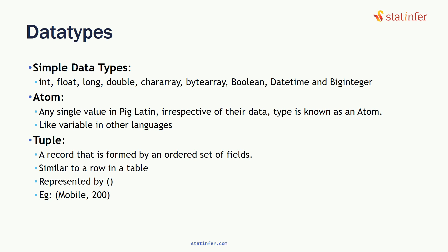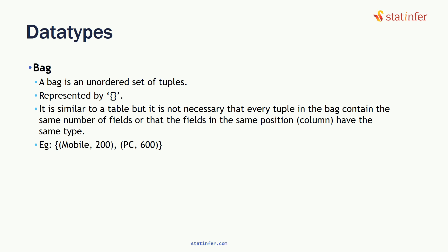Another important data type is tuple. A tuple is like a row in a generic data table — it contains an ordered set of fields. For example, a mobile item with price 200 is represented as (mobile, 200). The parentheses represent the tuple. If you have 20 columns, each row is a tuple with all 20 column values enclosed in parentheses.